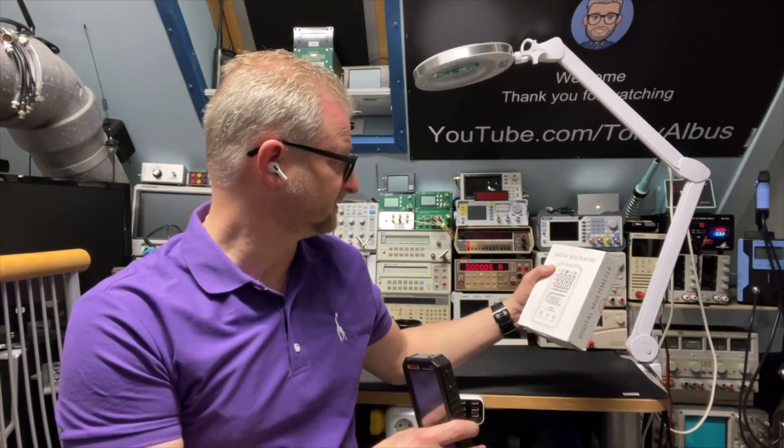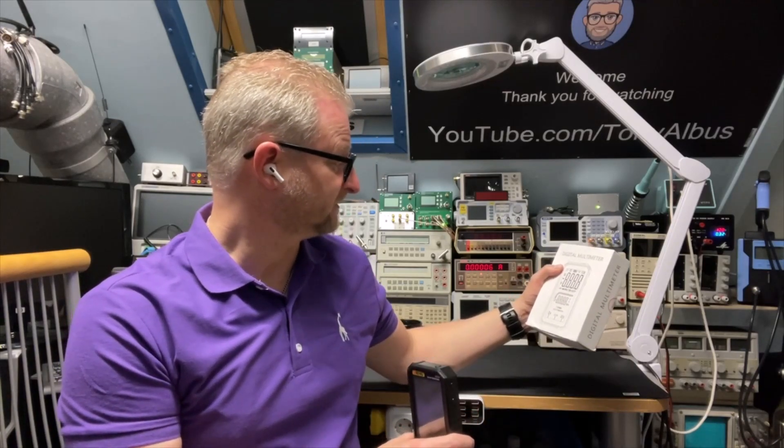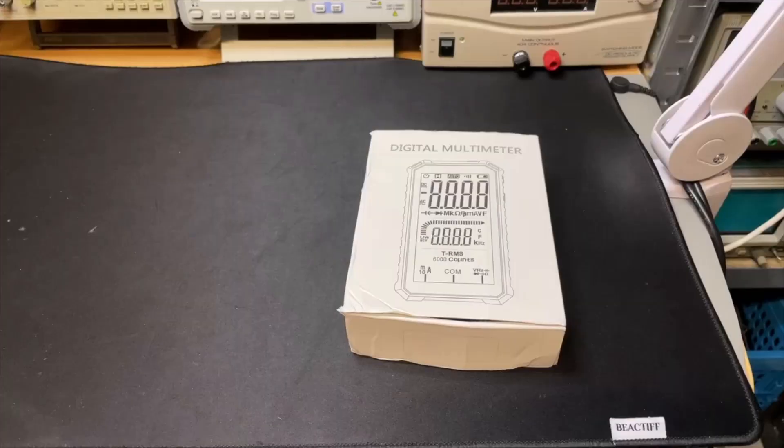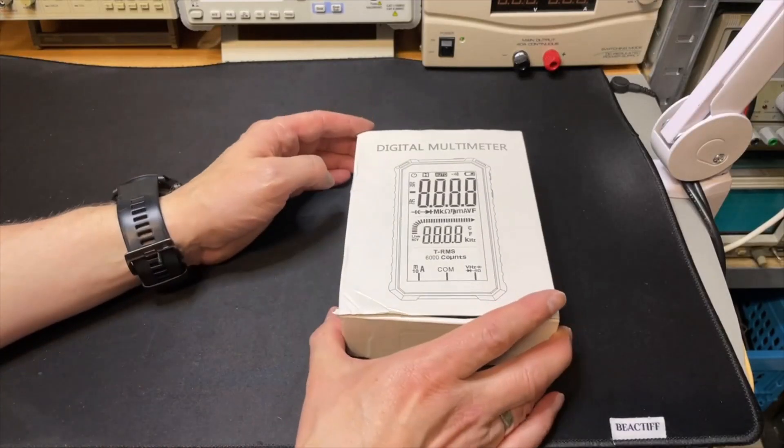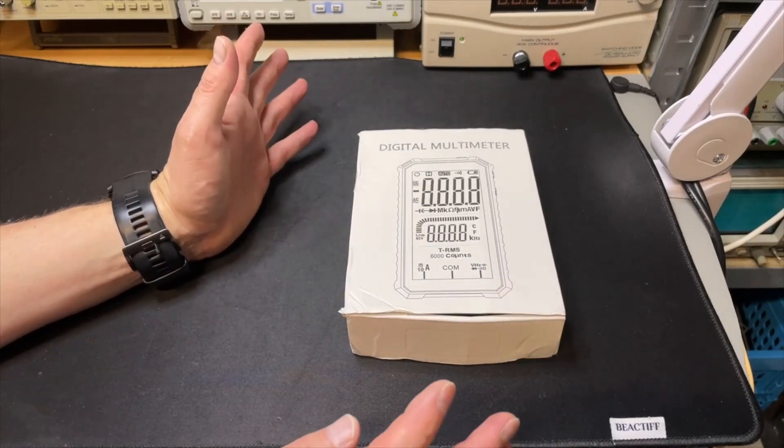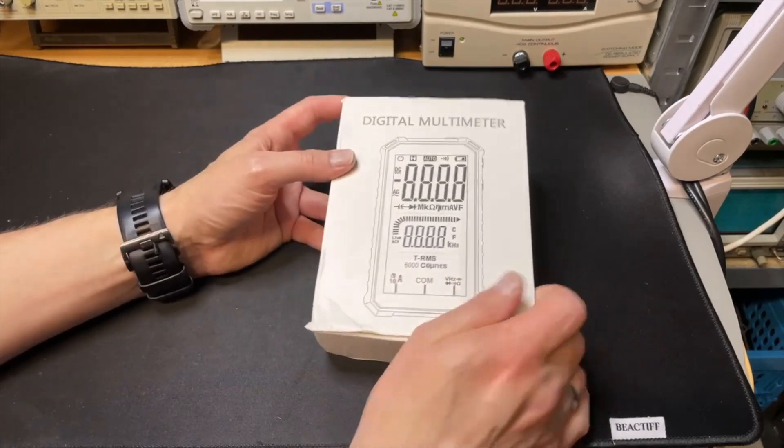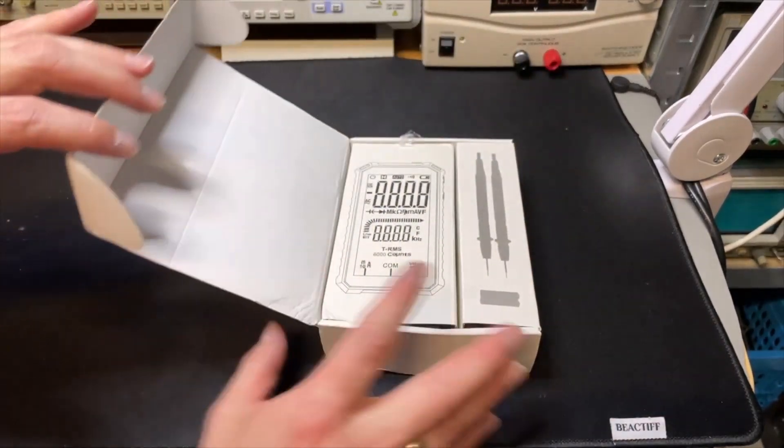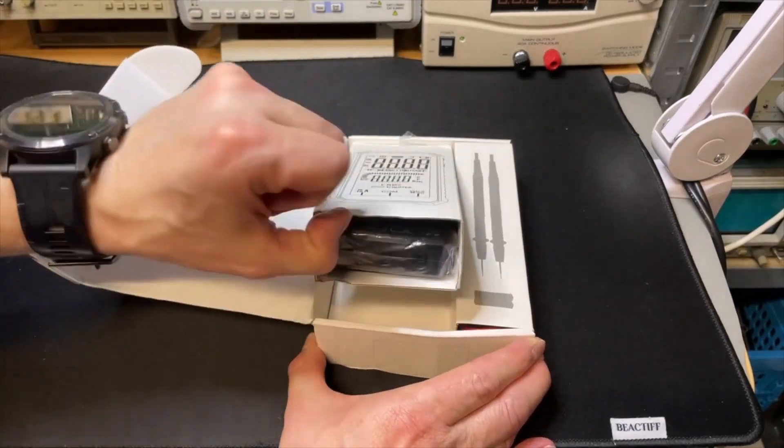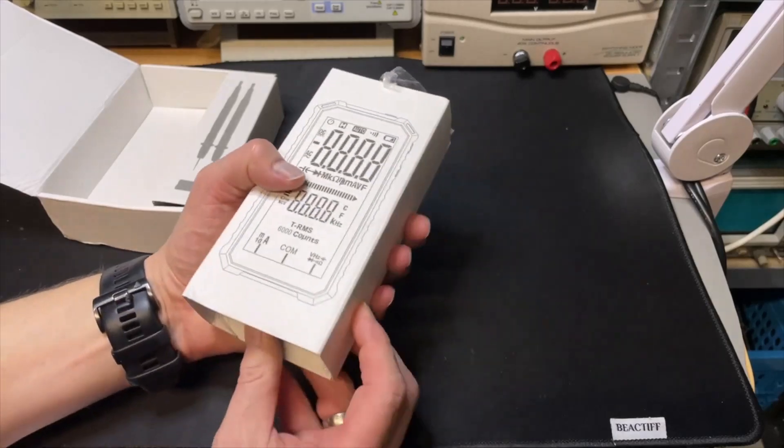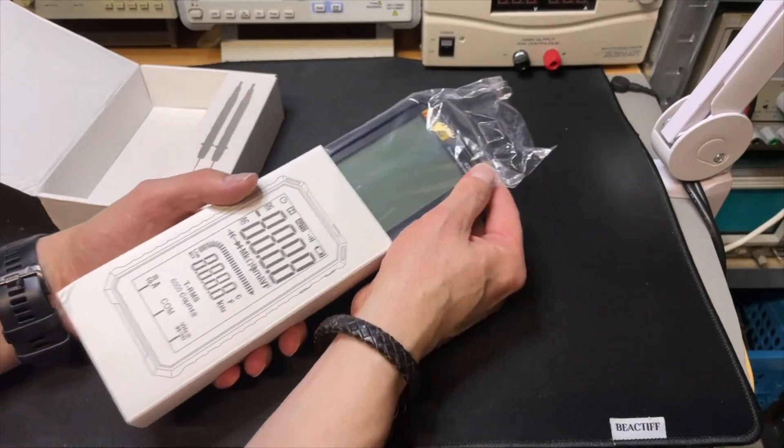It says here true RMS 6000 counts. Sounds very promising. I'm not sure if it was in a bubble envelope or they just sent it in a garbage bag as they usually do. I think this one came from Banggood. I already have it for a month and I never properly tried it. I was just interested about this but then I got distracted with a lot of other things.